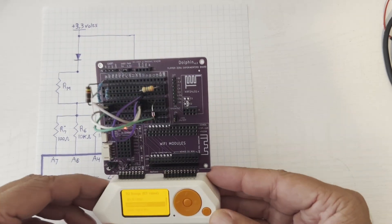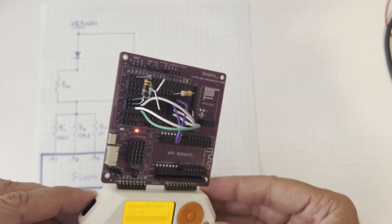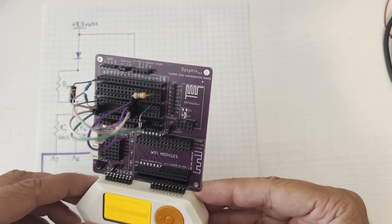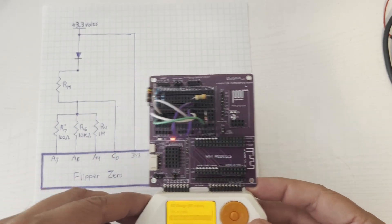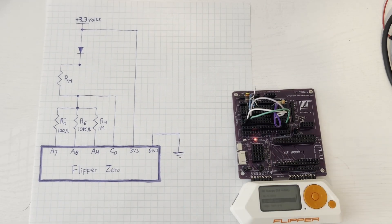Hey everyone! In a previous video I showed how the Flipper Zero could be used to measure resistance. In this video I'm going to explain how the circuit I built works. Okay, let's get started.